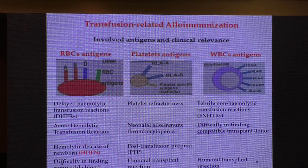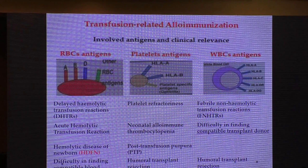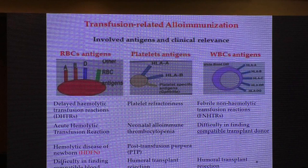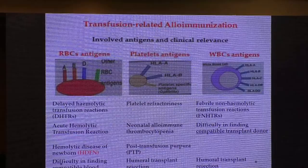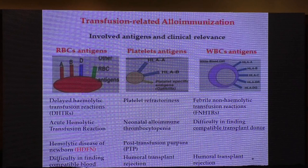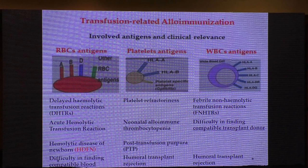The clinical significance is that if alloimmunization occurs against red blood cell antigens, it can cause delayed hemolytic transfusion reaction or acute transfusion reaction. In pregnancy, it can cause hemolytic disease of the newborn. In thalassemic patients, it causes difficulty in finding compatible blood. Against platelet antigens, it can cause platelet refractoriness, post-transfusion purpura, and humoral transplant rejection. Against white blood cell antigens, one of the most common complications is febrile non-hemolytic transfusion reaction, and it causes difficulty finding compatible bone marrow transplant donors due to HLA immunization, or transplant rejection after transplantation.